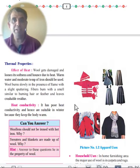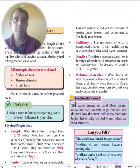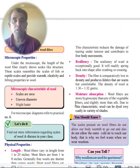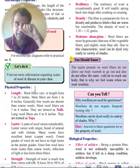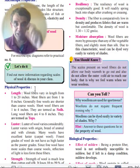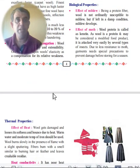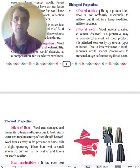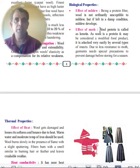Moving to properties of wool: there are four types — microscopic, physical, biological, and thermal. Under biological properties, wool is not highly susceptible to mildew, but if left in a damp area it can develop mildew.